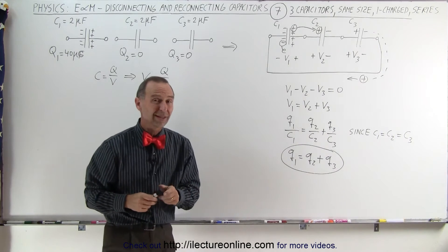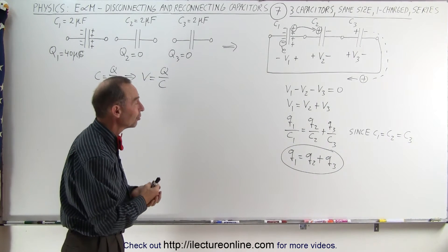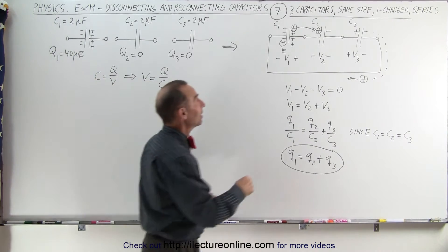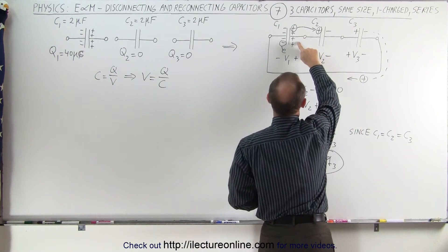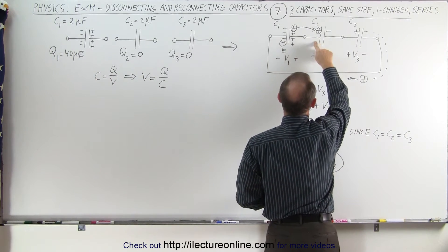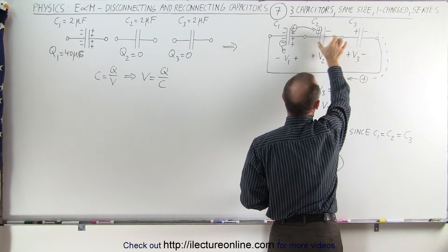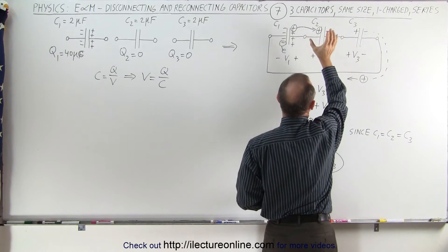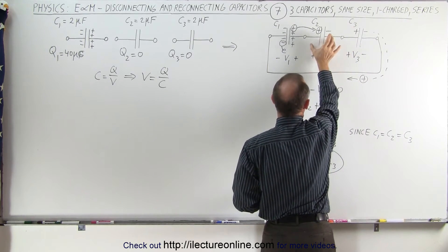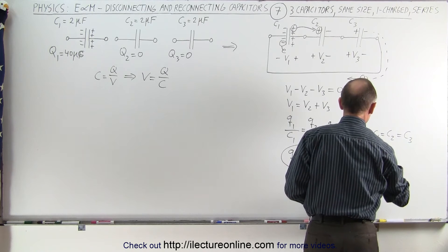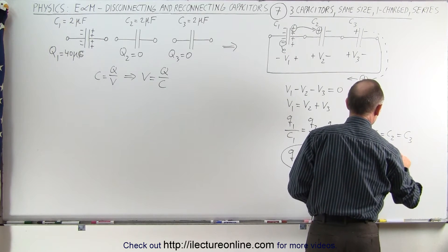Of course, we have three unknowns, which means we need two more equations, two more relationships. One relationship can be seen over here. For every charge that goes from C1 to C2, the same amount of charge goes to C3 as well, which means that because they're connected in series, the same amount of charge will exist on C2 as on C3. Therefore, we can write that Q2 will equal Q3.